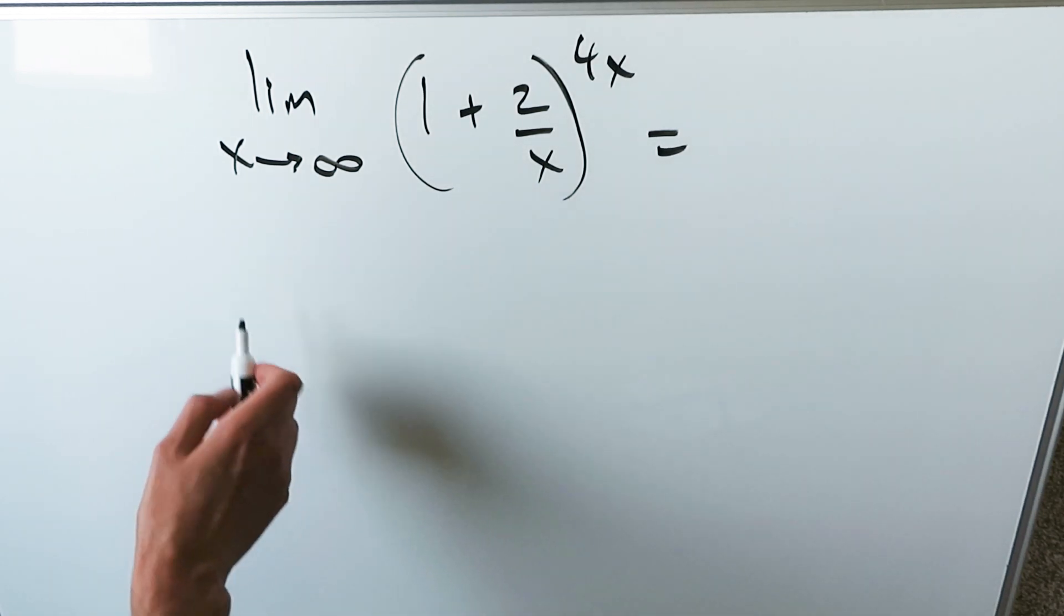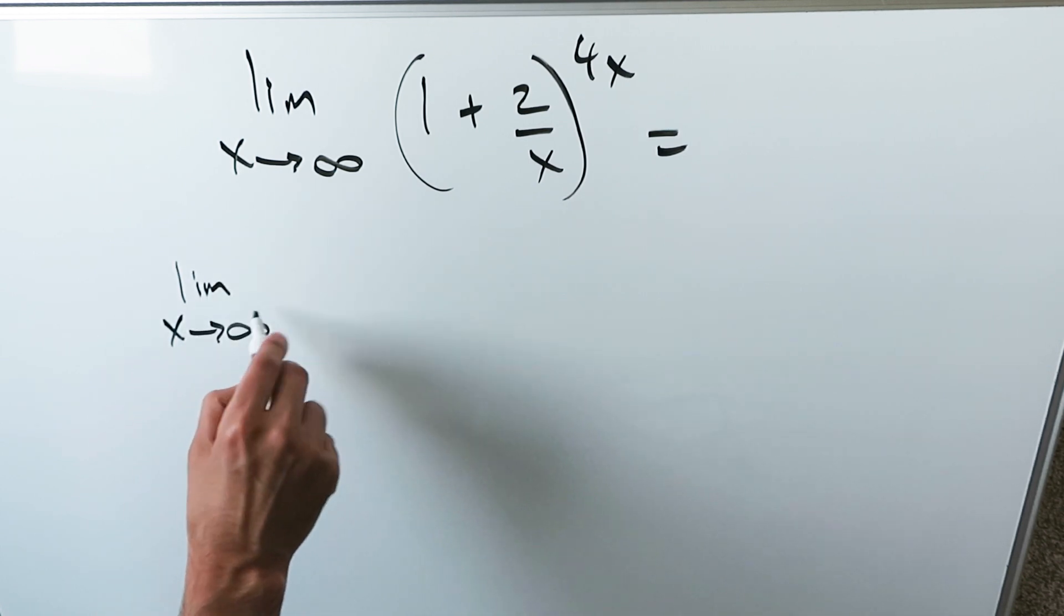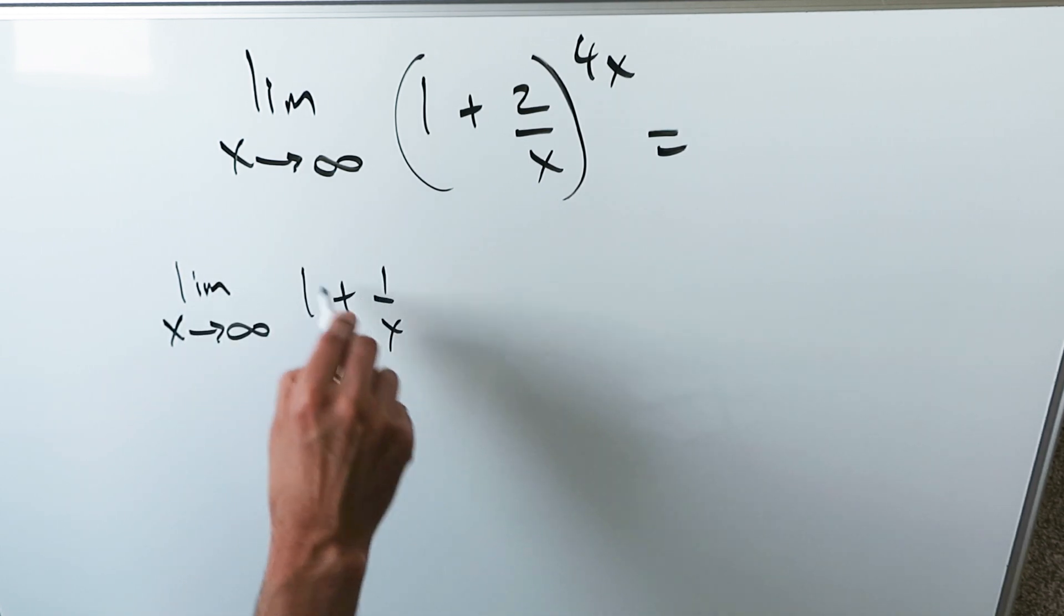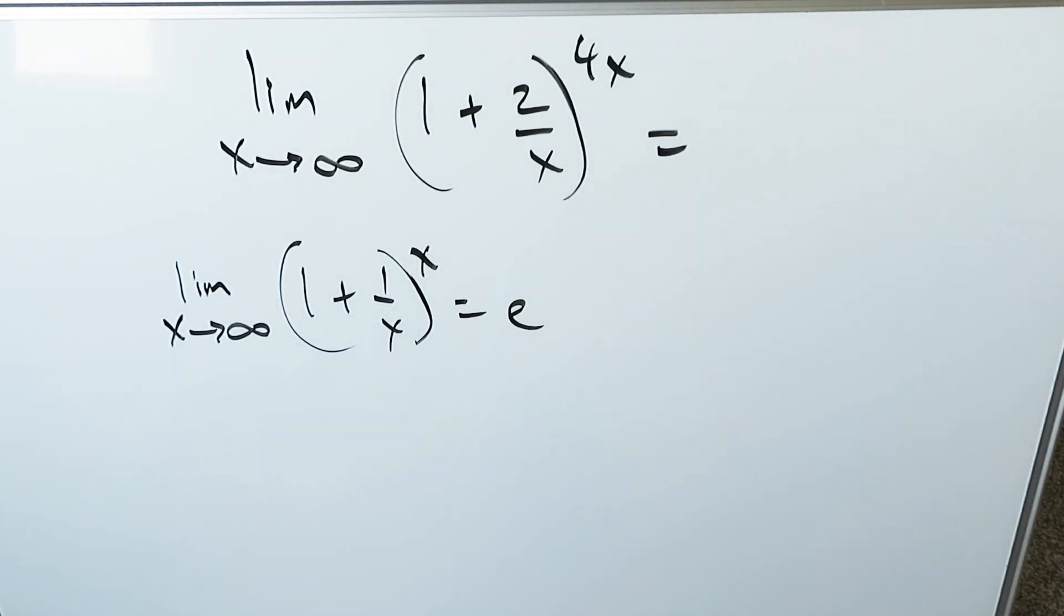Think about a very important limit definition which most students should know. Limit as x approaches infinity, I have 1 plus 1 over x to the power of x. If I evaluate this, it's always an end result of e.